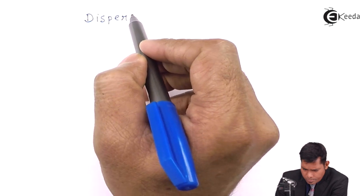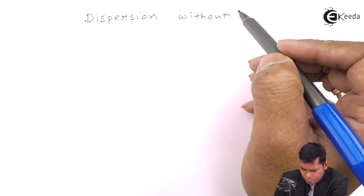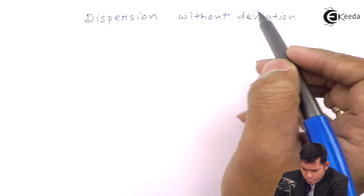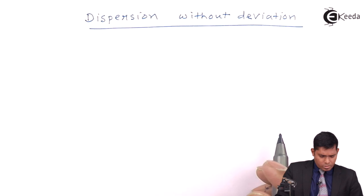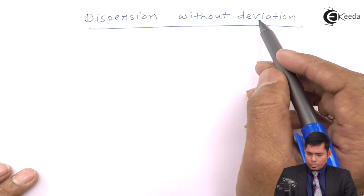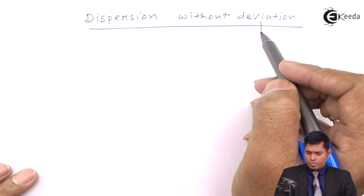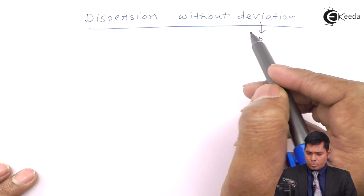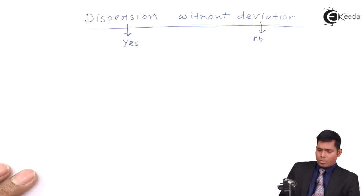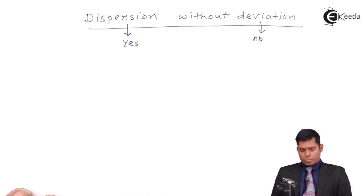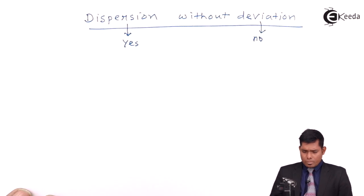Students, we will discuss the other part of this — dispersion without deviation. This means deviation will not occur, but dispersion will occur. So we will have an arrangement of two prisms again, but this time the situation is different.